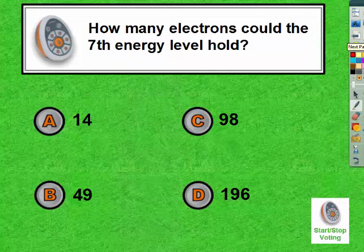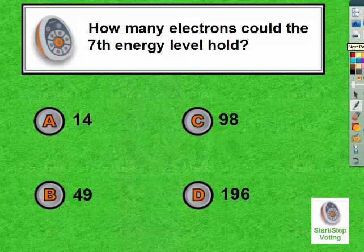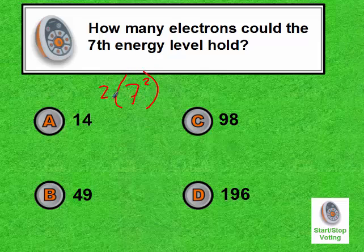So how many electrons could the seventh energy level hold? I'm going to pause the video and restart when you have your answer. 7 squared is 49 times 2 is 98.